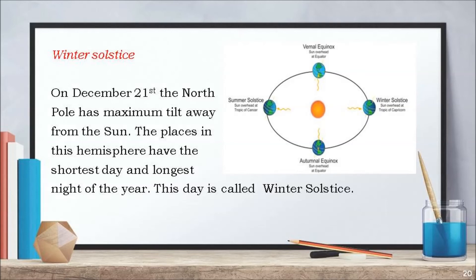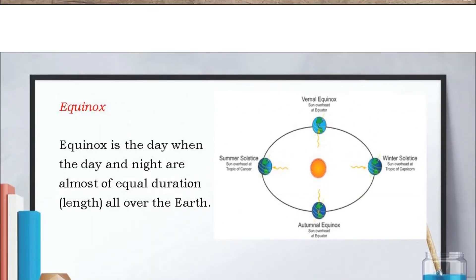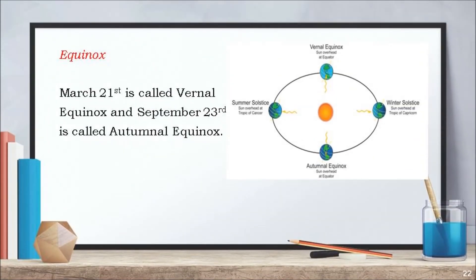Now let us learn about equinox. Equinox is the day when the day and night are almost of equal duration all over the earth. March 21st is called vernal equinox, when days and nights are equal all over the earth during spring season. Similarly, September 23rd is called autumnal equinox, which falls in autumn season.